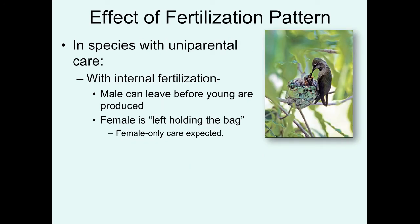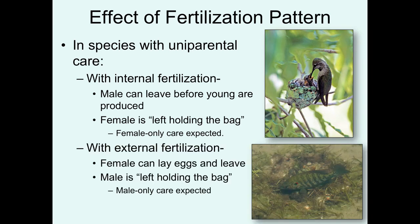This leads into a discussion of the effect of the fertilization pattern. In species with uniparental care, if you have internal fertilization, the male can basically leave before the young are produced, leaving the female holding the bag — so we would expect female-only care. An example is hummingbirds: the male and female mate, and days later the female lays eggs and provides all the care. With external fertilization, females can lay eggs and immediately leave, and as the male approaches to shed sperm onto the eggs, because he's the last one there, he may be left holding the bag — so male-only care would be expected. Many fish species show this pattern.